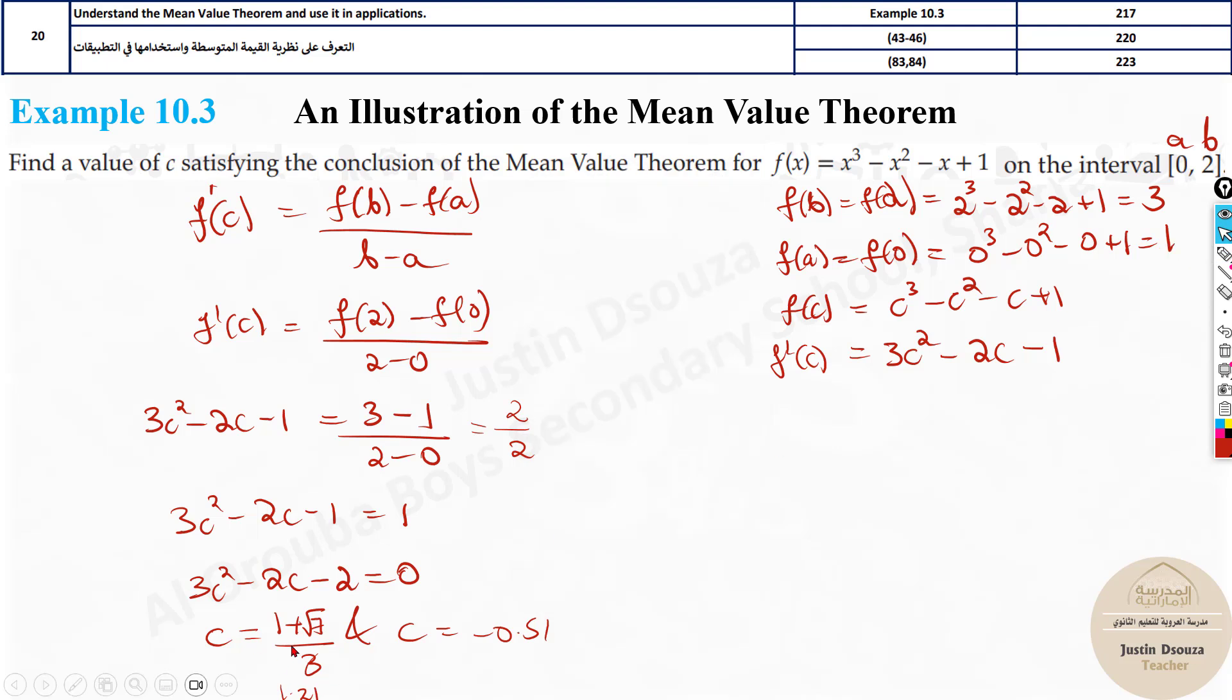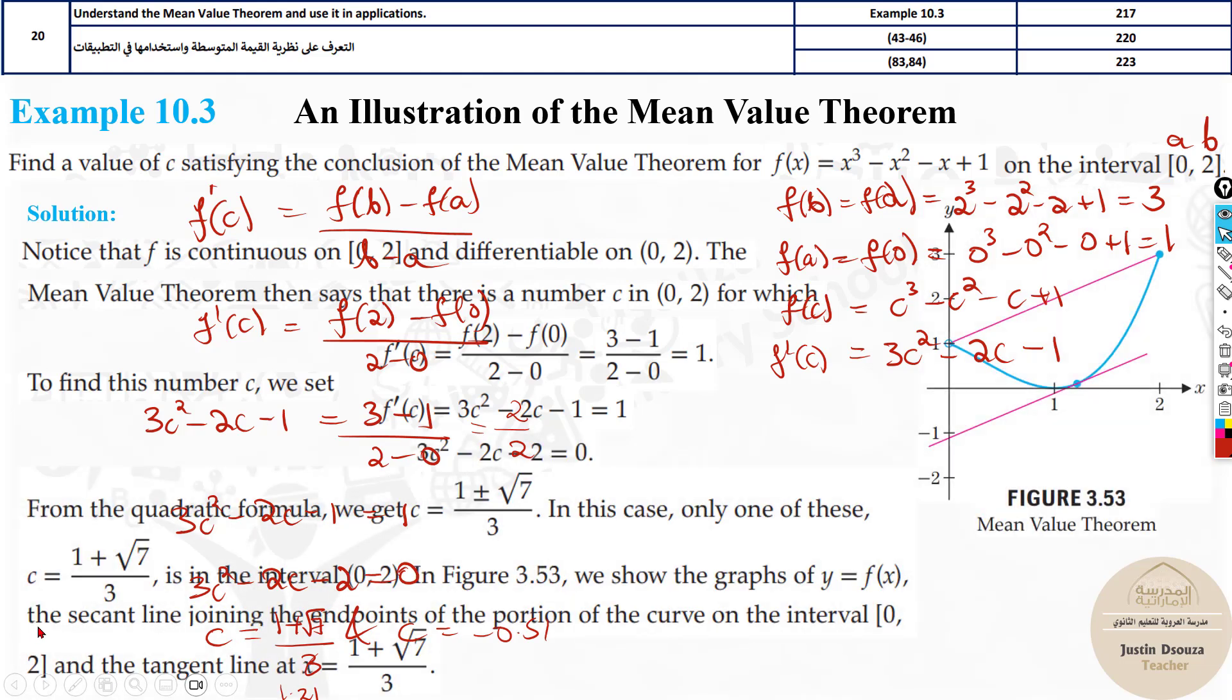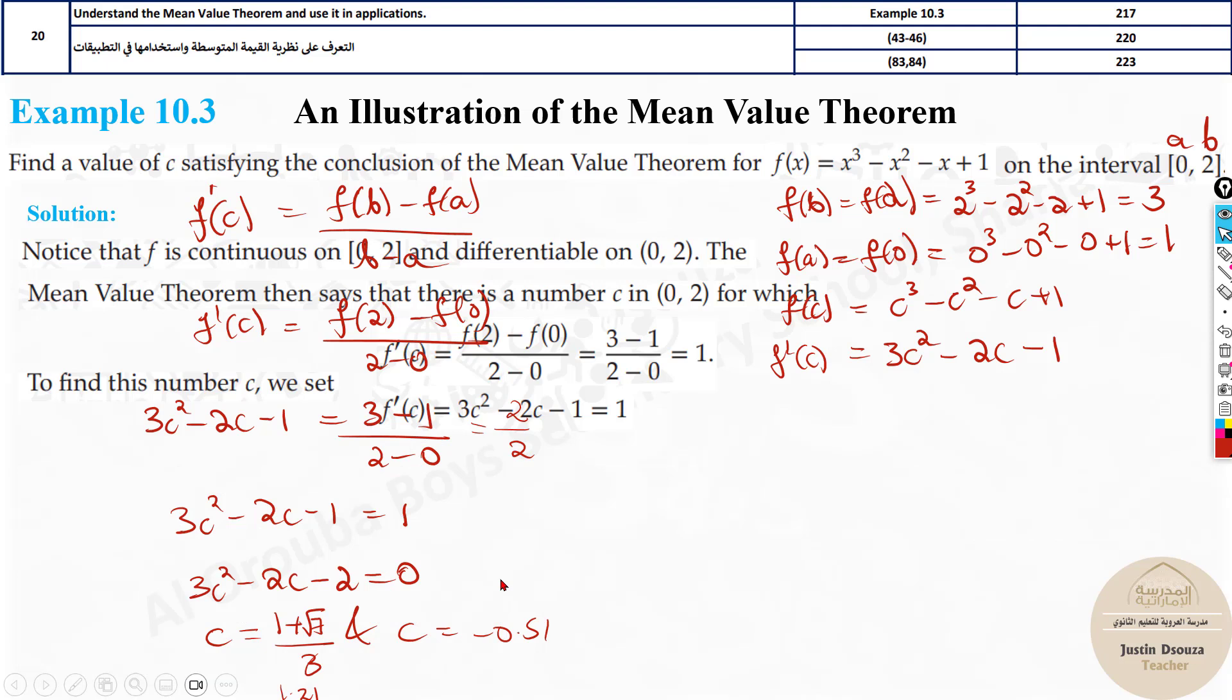Now, at this particular point, we have just found the value of c that satisfies this condition. That's it. This is the answer. C is this. Or it's 1.21. Let's see what is given in the answer. It's given as 1 point root 7 by 3. Why the other one is not taken? Because it's not in the limit. That's why we have not considered it. This is it. This is the answer.